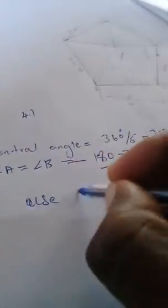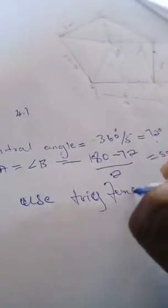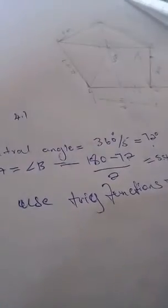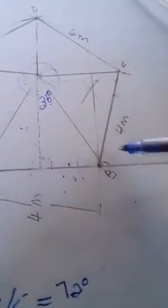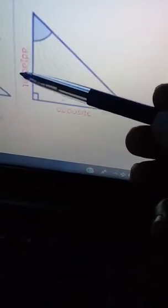We are going to use trig functions to find our perpendicular height for this triangle. The adjacent is on one side, the opposite is the perpendicular height, and the hypotenuse is the other side. We go to our trig functions — the one that has opposite and adjacent is tangent.